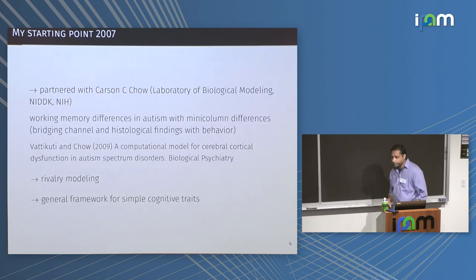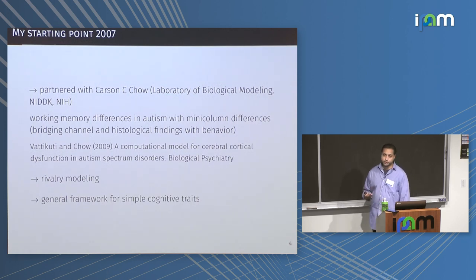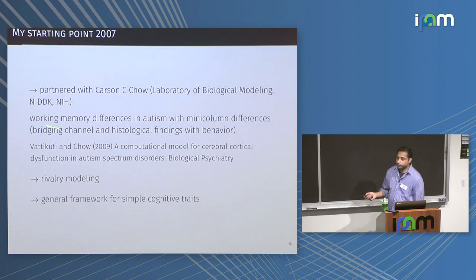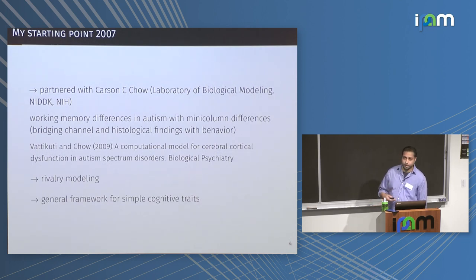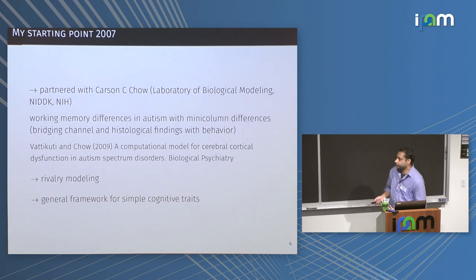I really wanted to make this concrete — we had all these ideas but I wanted to make them concrete. So I ended up partnering with Carson Chow, who had done great work in modeling neurophysiological models of psychophysics. The first thing we did was use a very popular model of working memory — the Compte-Brunel-Goldman-Rakic-Xiao-Jing Wang model. We took this model, inserted some of these channel differences trying to model mini-column abnormalities, and showed you can explain the psychophysical differences that Nancy Minshew was seeing in her experiments.